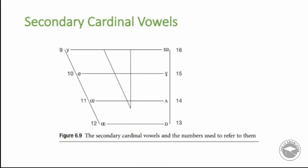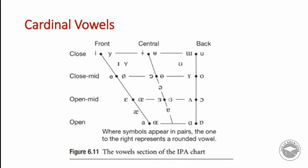For secondary vowels, they are numbered 9–12 on the left and 13–16 on the right. In the cardinal vowel chart, we are concerned with front, back, and central positions. The vertical axis shows tongue height: close, close-mid, open-mid, and open. The horizontal axis shows tongue advancement: front, central, and back. Secondary cardinal vowels are described the same as primary cardinal vowels except for lip rounding.